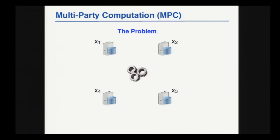In multi-party computation, we consider n parties, each party has a private input, and they wish to perform some joint computation on those inputs — for example, compute a function on those inputs.